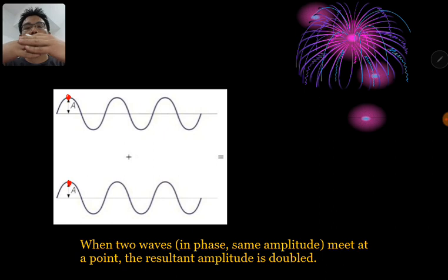And they meet at points. So let's say this point, it arrives at the point of intersection. So these two points, these two peaks are going to form a higher peak.